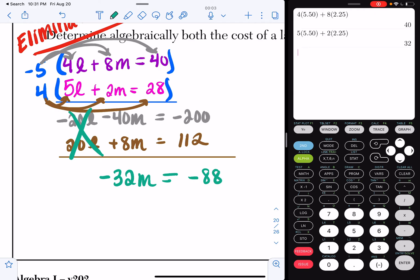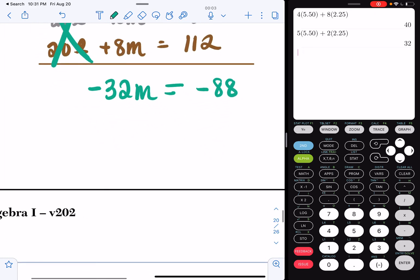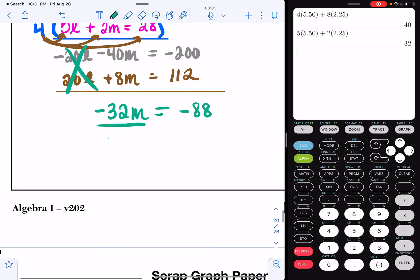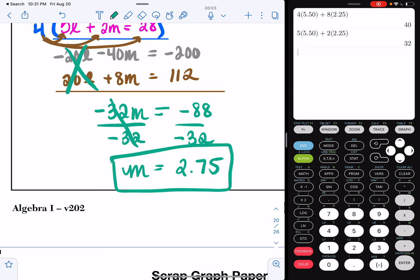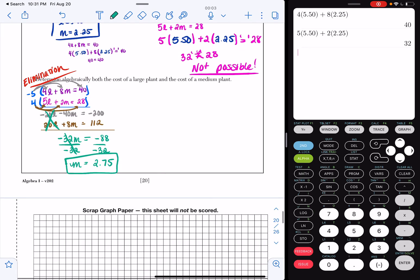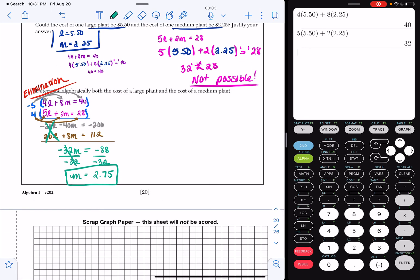Now the only way to get rid of that negative 32 is to divide both sides of my equation by negative 32. So I'm going to just divide by negative 32, divide by negative 32. And I get M is equal to 2.75. So what we know right now is that the cost of a medium flower or medium plant is $2.75.